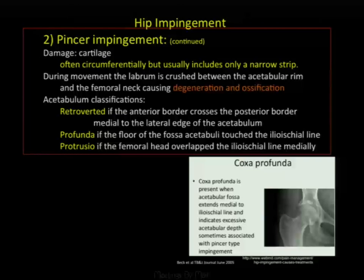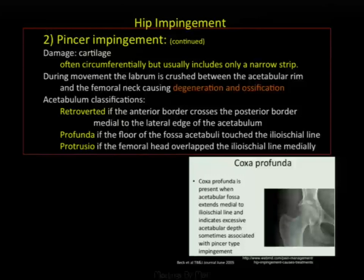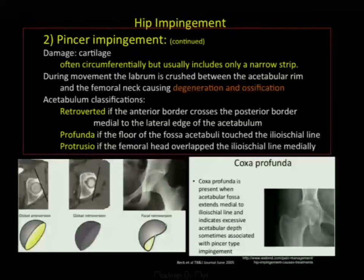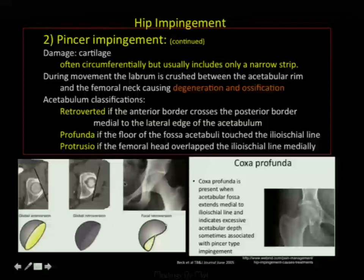Cartilage damage in pincer impingement is usually circumferential but typically a narrow strip that may lead to degeneration, with ossification visible on CT and sometimes on x-ray. There are three main classes of acetabular over-coverage: retroverted, profunda (where the acetabular fossa touches the ilioischial line), and protrusio (where it goes beyond). Global retroversion and focal retroversion both cause problems due to over-coverage.